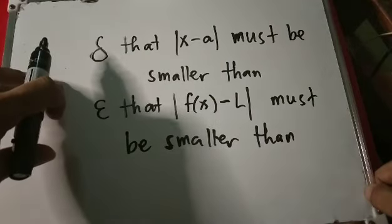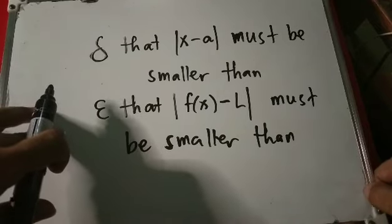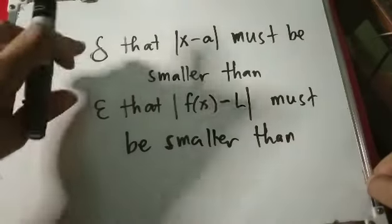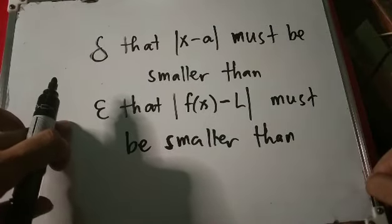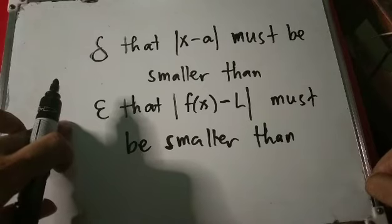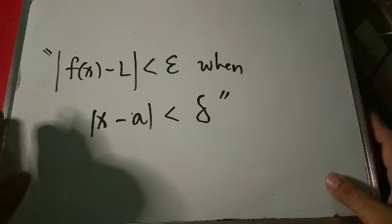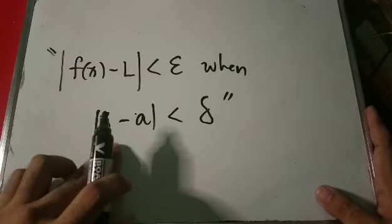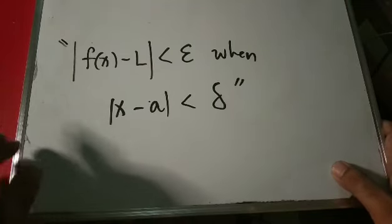But 'small' is still English and not a mathematical term, so let's choose two values to be smaller than. We introduce the Greek symbols delta and epsilon. Delta: the absolute value of x minus a must be smaller than delta. Epsilon: the absolute value of f of x minus L must be smaller than epsilon. These two Greek letters — delta and epsilon — are often used for this, leading to the phrase 'delta-epsilon': the absolute value of f of x minus L is less than epsilon when the absolute value of x minus a is less than delta.